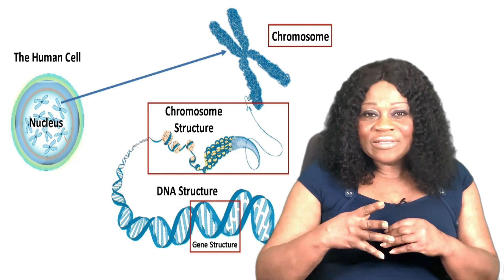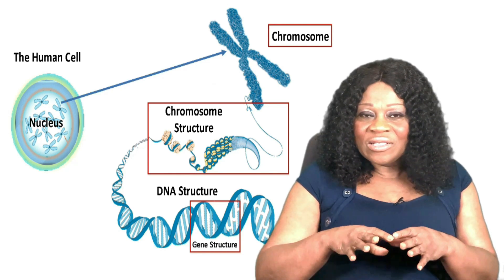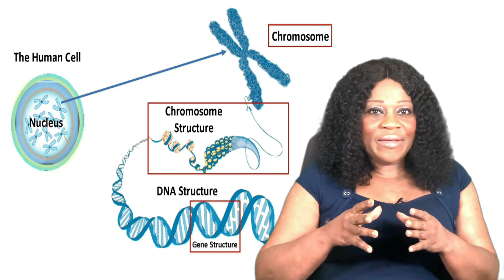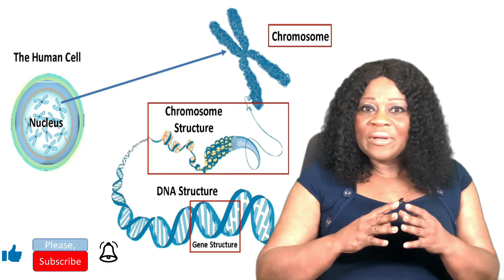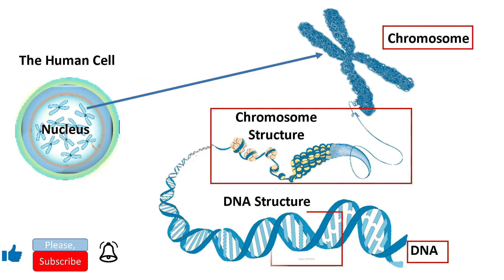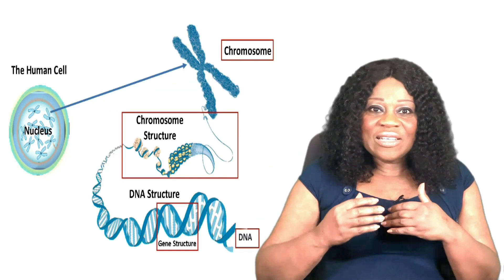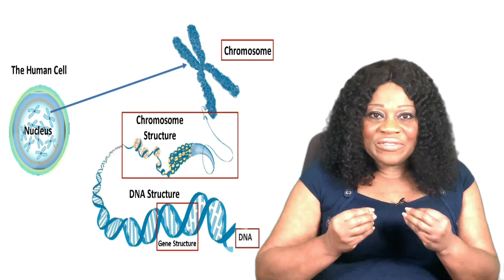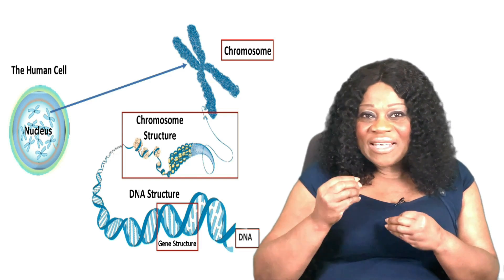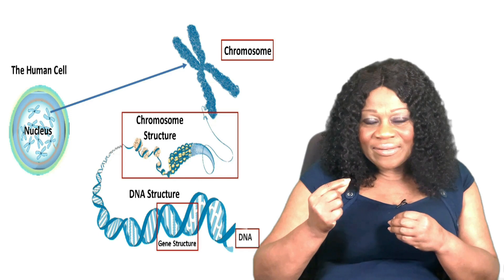Genes govern physical and medical characteristics such as hair colour, blood type, and susceptibility to disease. DNA is made up of genes passed from parents to offspring and contains the specific instructions that make each type of living creature unique.